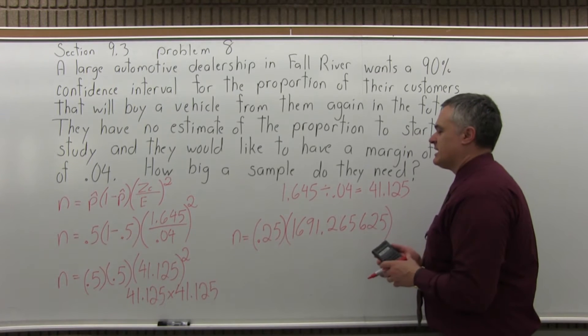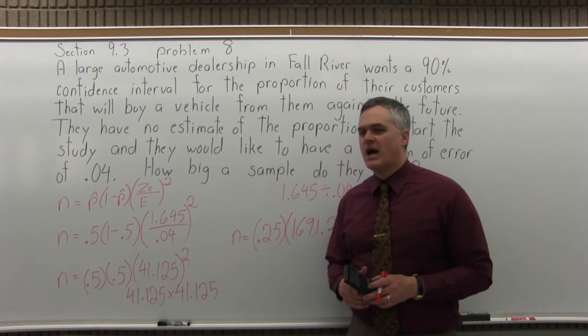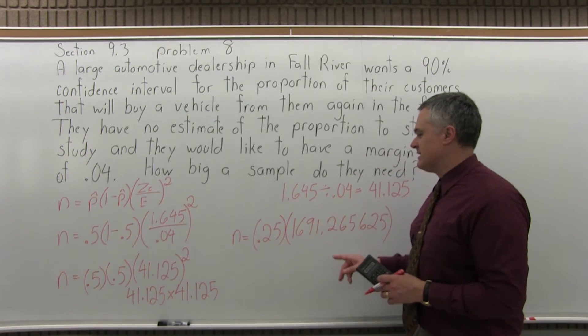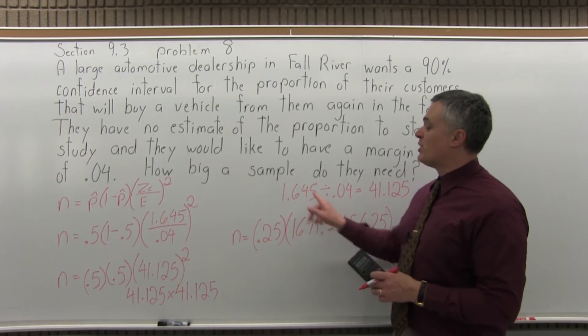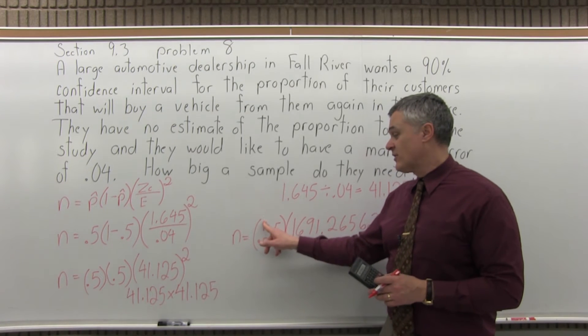So 41.125 times 41.125 is 1,691.265625. That's more decimals than I need, but just let it run for now and we'll round it once at the end.